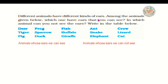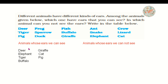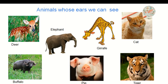Different animals have different kinds of ears. Among the animals given below, which ones have ears that you can see? We have to separate the animals based on their ears. Animals whose ears we can see: deer, elephant, tiger, buffalo, giraffe, cat, pig. These animals have external ears — we can see the ears of all these animals.